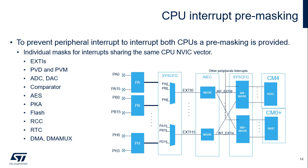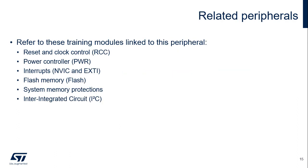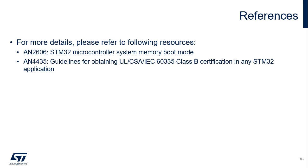Peripheral interrupts sharing the same NVIC vector have a mask to prevent them from interrupting both CPUs. In addition to this training, you can refer to the reset and clock control, power controller, interrupts, flash, system memory protections, timers, and I2C trainings. For more details, please refer to Application Notes AN2606, STM32 Microcontroller System Memory Boot Mode, and AN4435, guidelines for obtaining UL/CSA IEC 60335 Class B certification in any STM32 application.